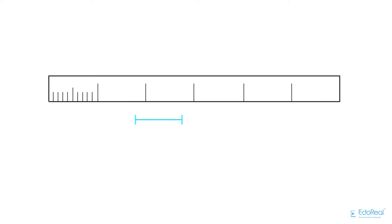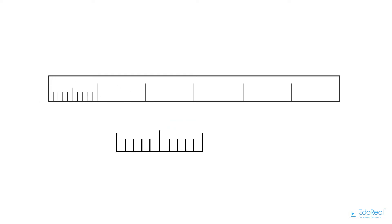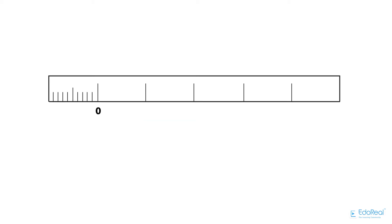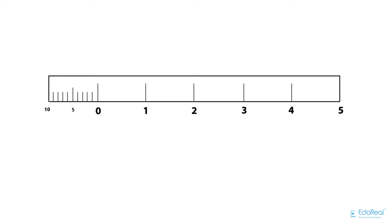It consists of a line divided into a suitable number of equal units. The first unit is subdivided into smaller parts. The zero should be placed at the end of the first main unit. From the zero mark, the units should be numbered to the right, and the subdivisions to the left. Write the main or first unit name to the right of the scale, and the subunit name to the left. The RF should be mentioned below the scale.